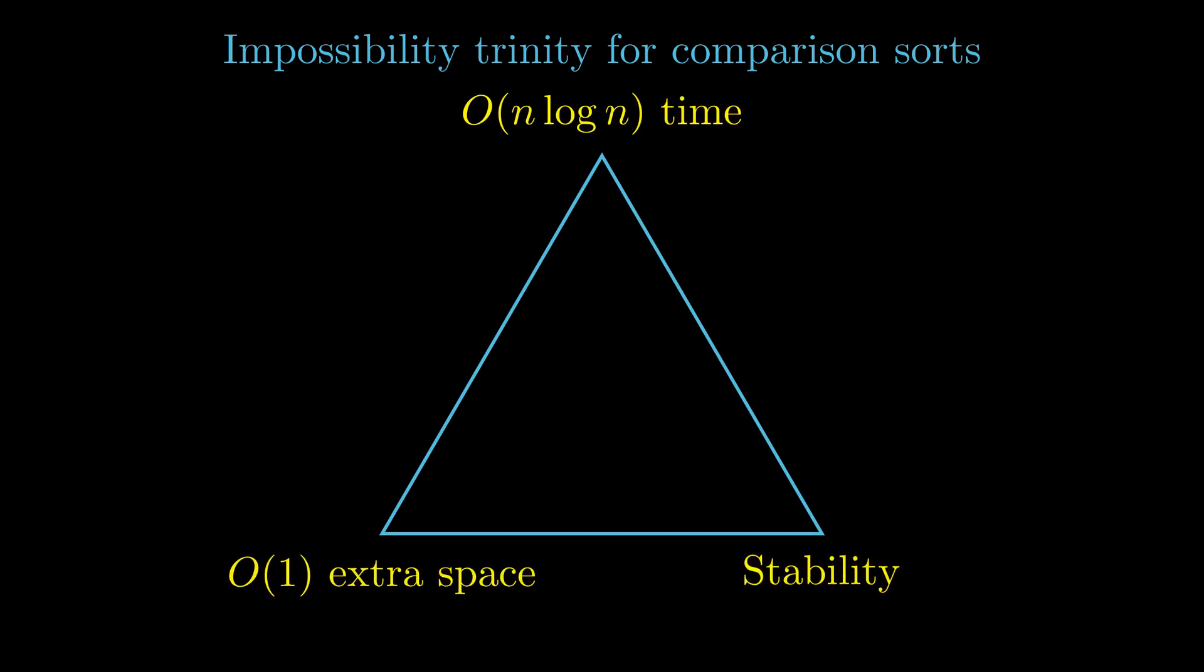There are three desirable properties that we want from a comparison-based sort. We want it to run in O(n log n) time, because that is the best a comparison-based sort can do.